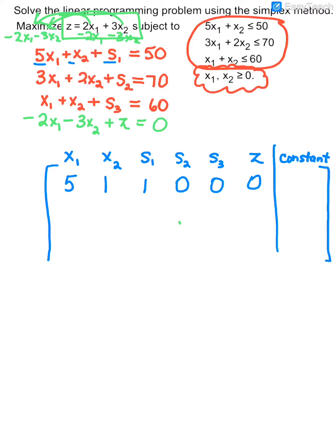Remember the line is like the equal sign, and the constant is 50. Starting out, that row will represent the value of S1. For my second row, taking the coefficients I have a 3. Notice the coefficient of X2 is 2. We do not have S1, so we put a 0. The coefficient of S2 is understood to be 1. We do not have S3 or Z, so those are zeros, and the constant is 70. Starting out, that row will represent the value of S2.